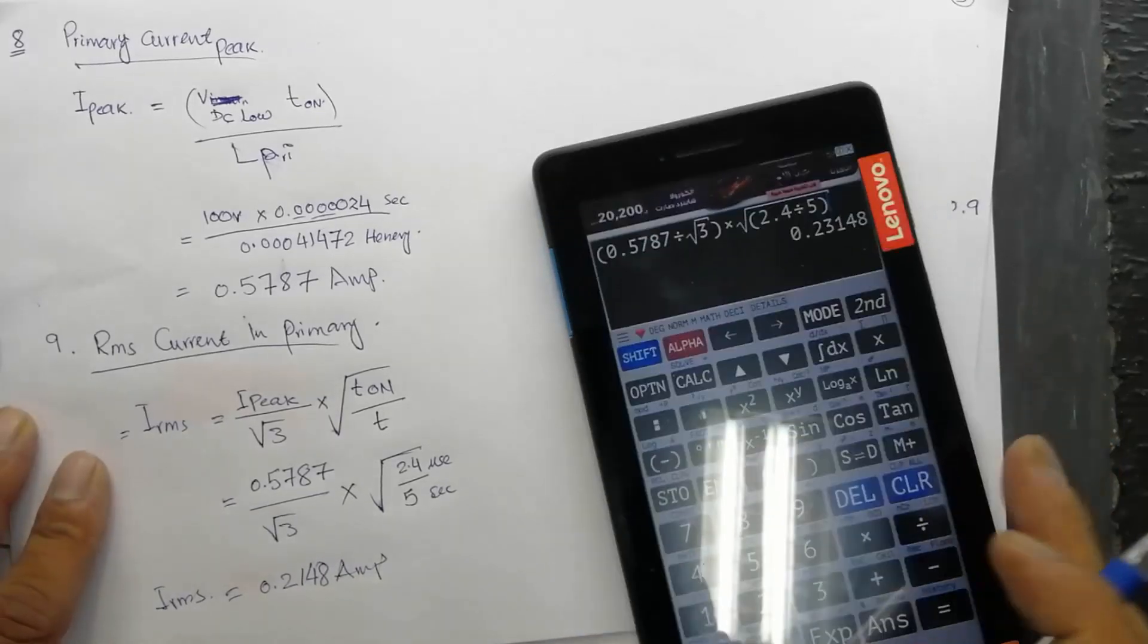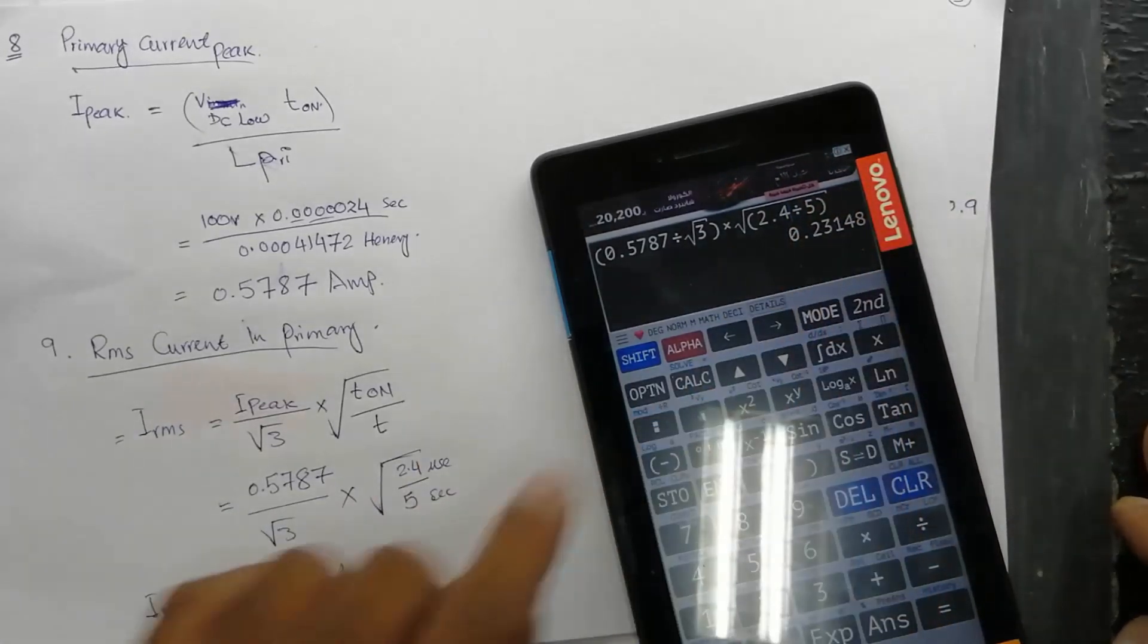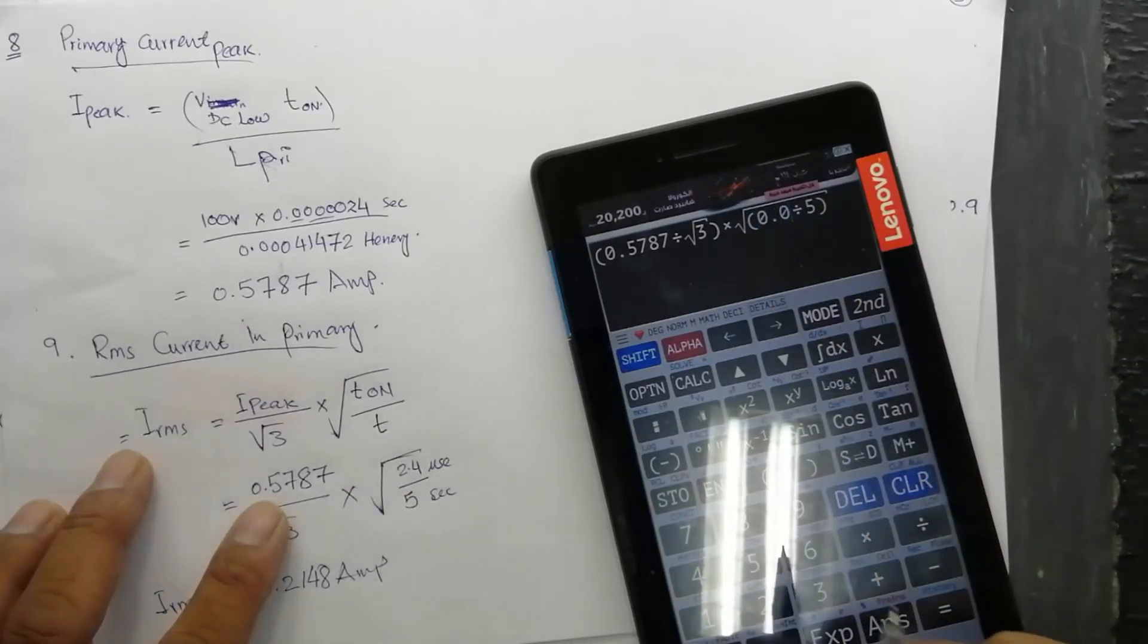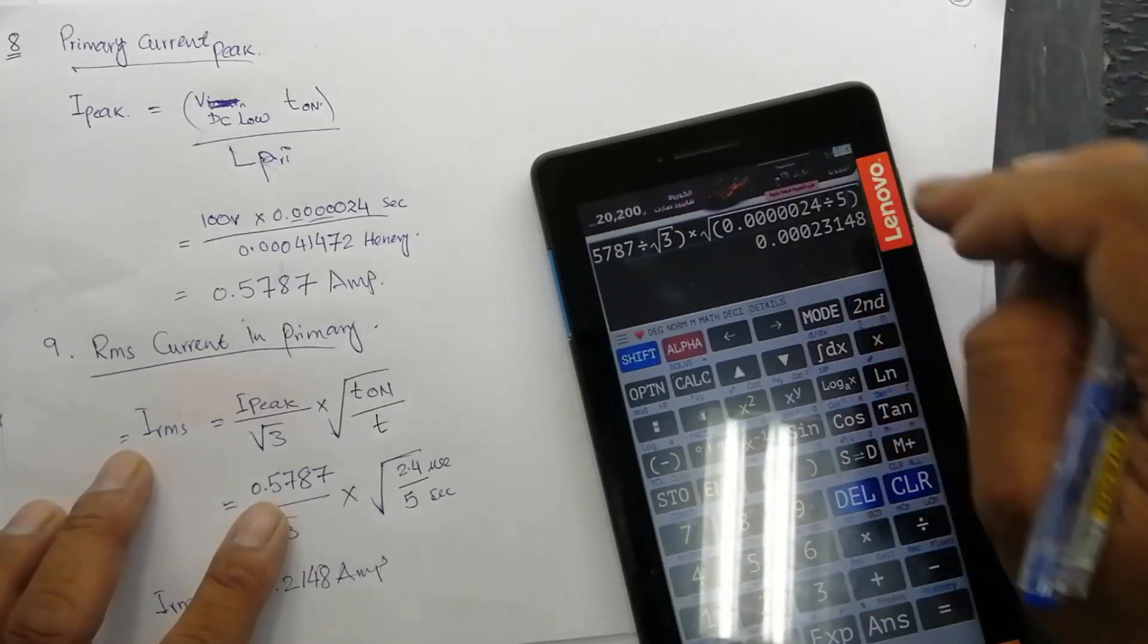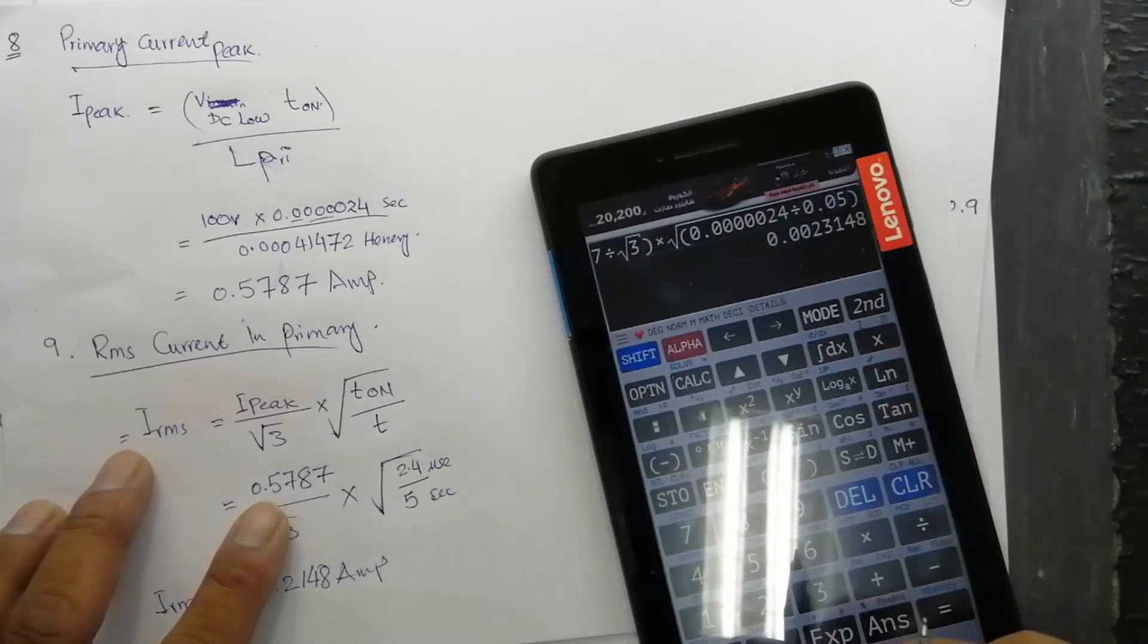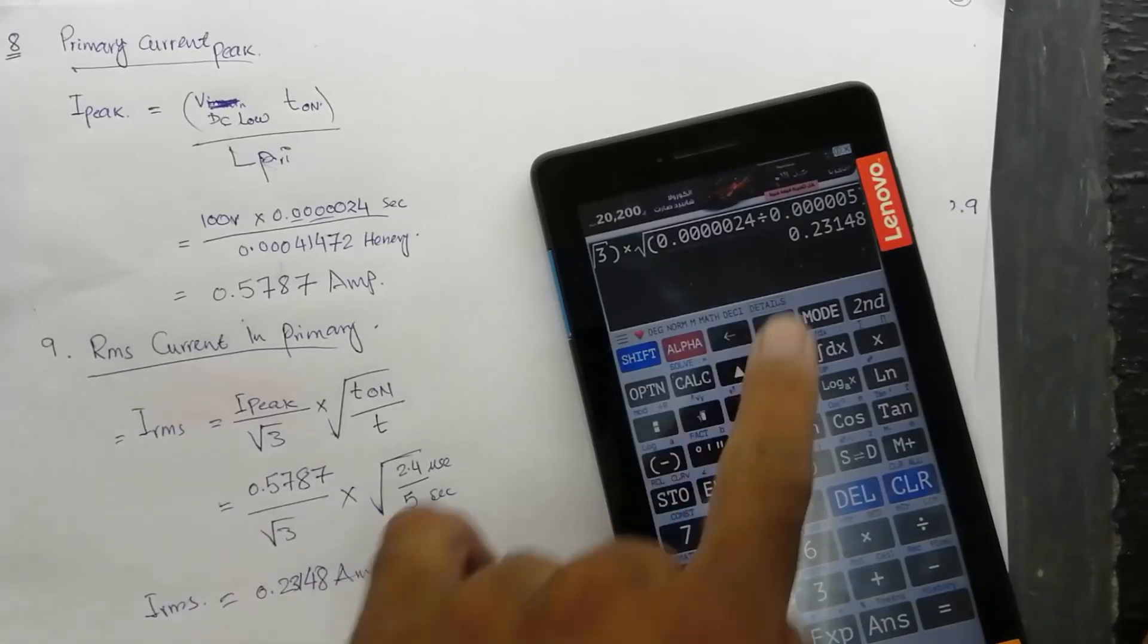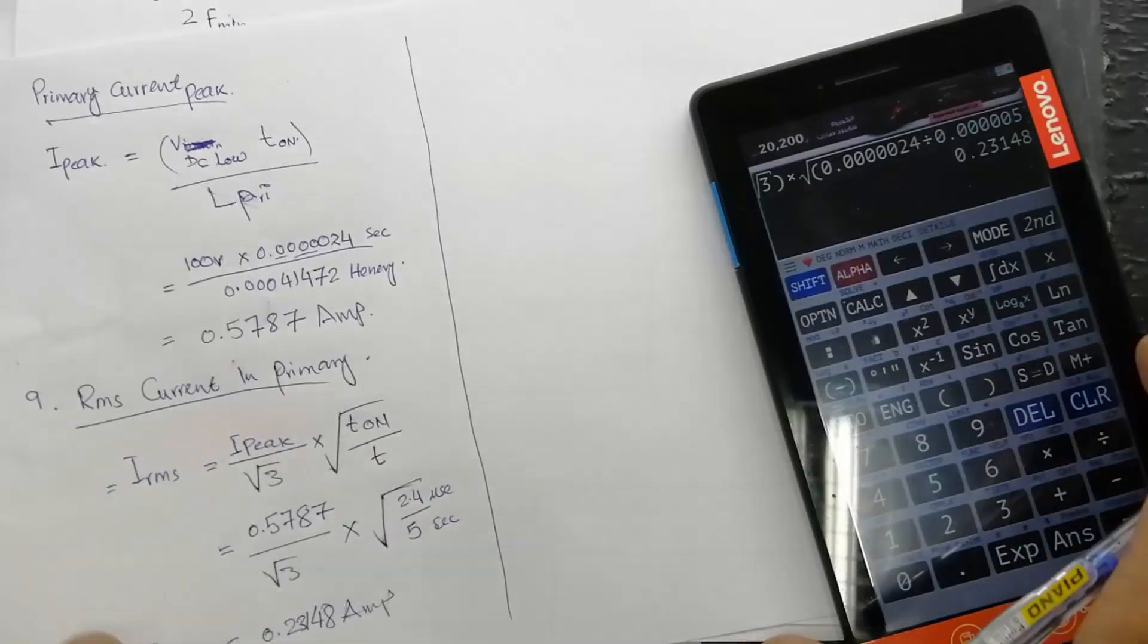If we calculate it, I can put in microseconds or I can make it 0.0000024 in seconds. It is the same, 0.2318. So we can put 2.4 microseconds or seconds, it will work because it is calculated separately.